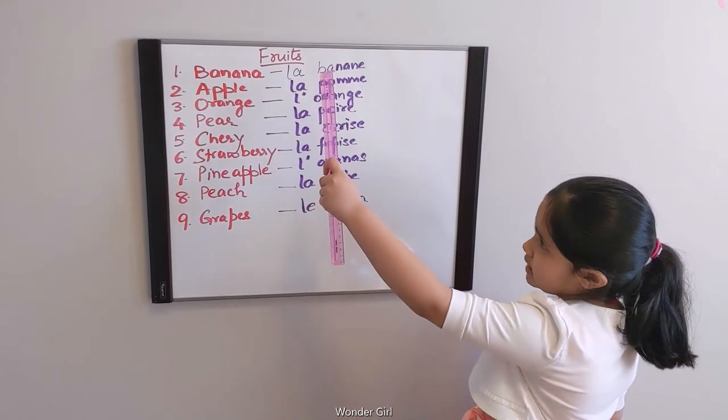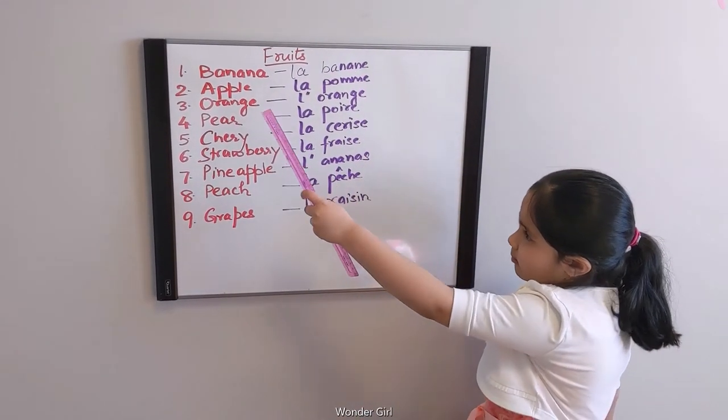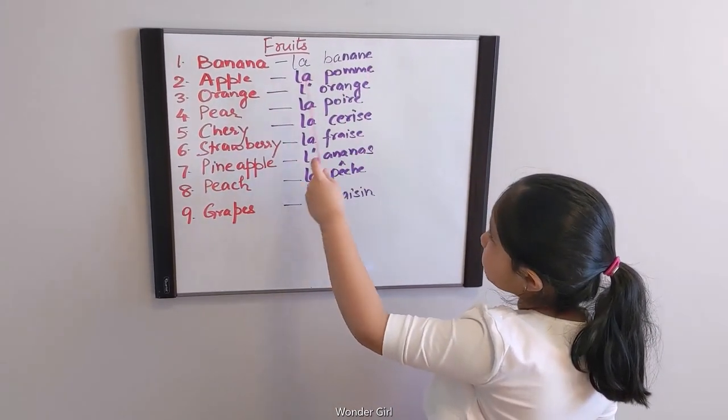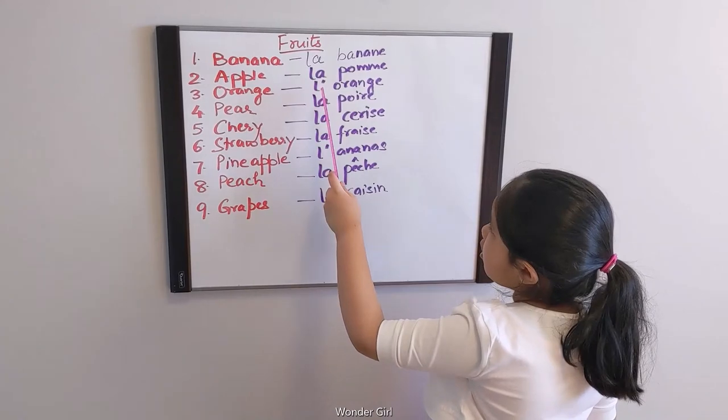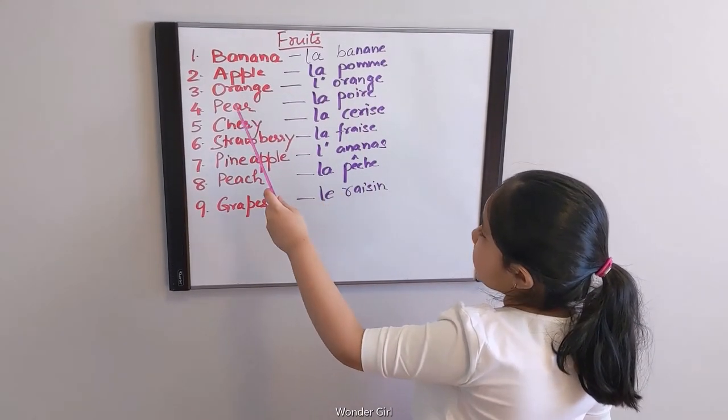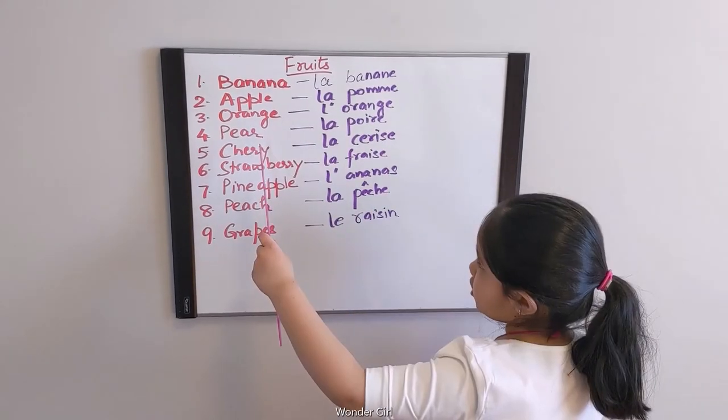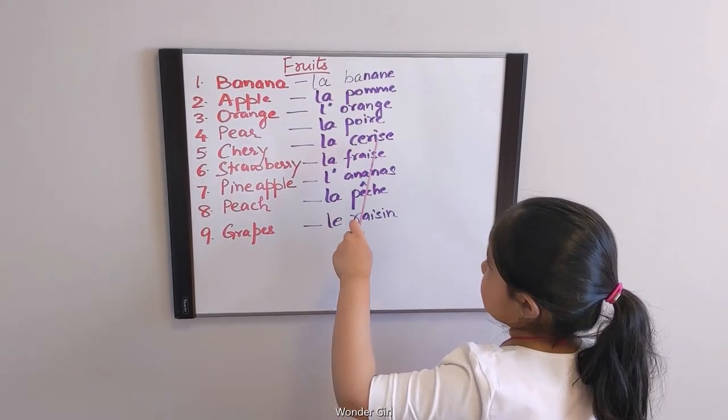Fruits, la fruit. Banana, la banane. Apple, la pomme. Orange, la orange. Pear, la poire. Cherry, la cerise.